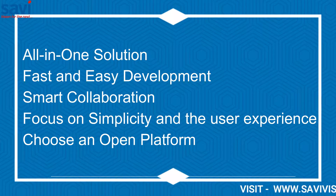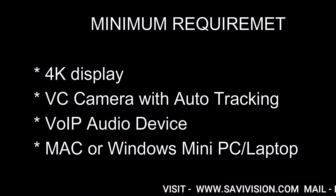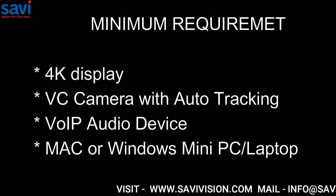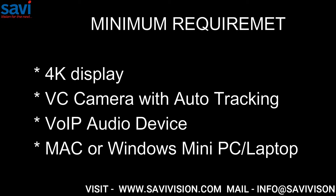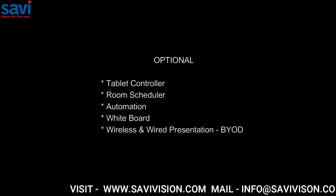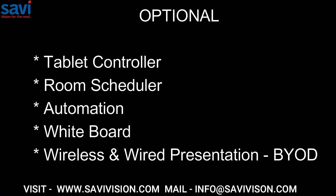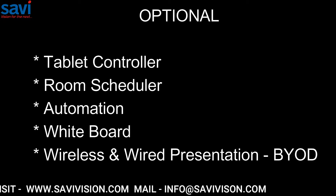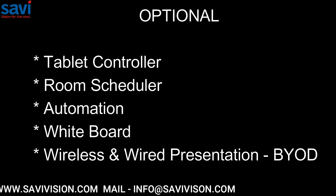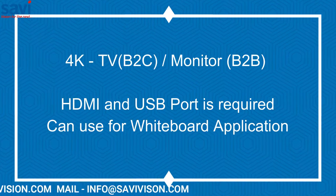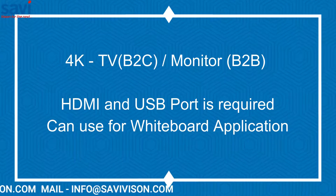In a huddle room we require fast and easy deployment, smart collaboration, a focus on simplicity and user experience. Choose an open platform. Minimum requirements include a 4K display, PC camera with auto tracking, VoIP audio device, and a Mac or Windows PC or laptop. Optional items include a tablet controller, room scheduler, automation, wireless and whiteboard presentation, and bring your own device support.